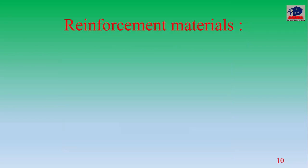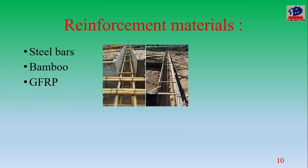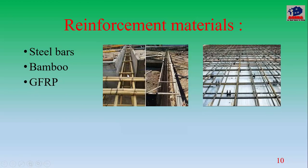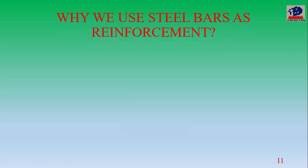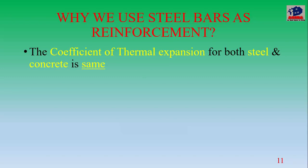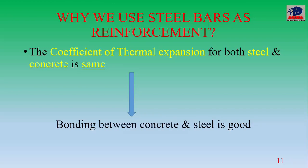What is the reinforcement material? We use steel bars — these are the most commonly used. We also use bamboo and glass fiber reinforcement as alternative reinforcement materials. The reason steel bars are commonly used is that steel and concrete have the same coefficient of thermal expansion, so temperature variation causes the same expansion in both materials, and these two materials form a strong bond.